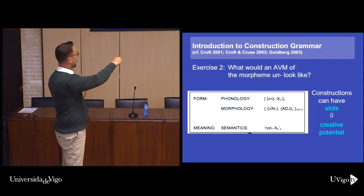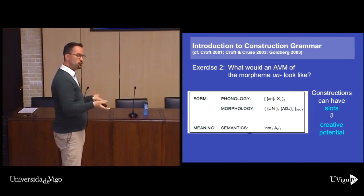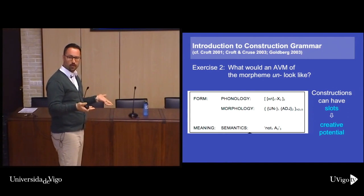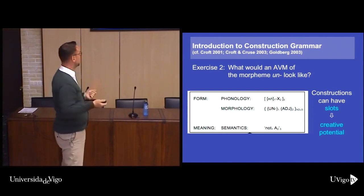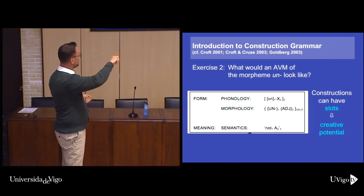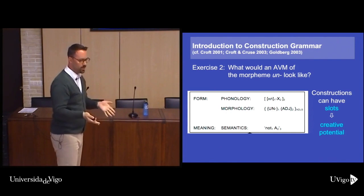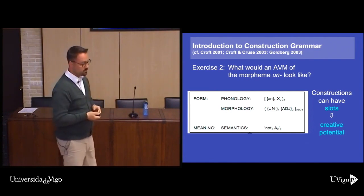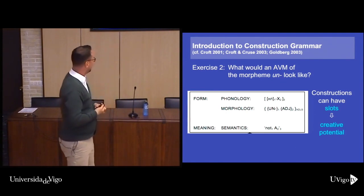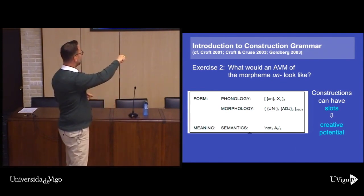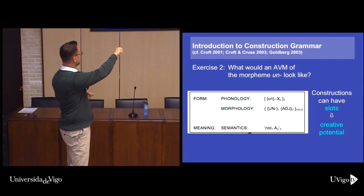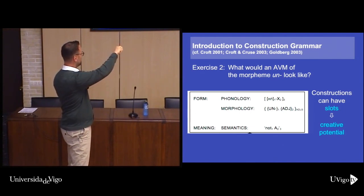The slot mechanism works as follows: if you stick in 'happy' — it is an adjective, that checks out — then the meaning is 'happy', and the meaning of the full construction is 'not happy', with the phonological realisation 'unhappy'. So the form-meaning association is: UN- prefix means 'not', and the adjective slot provides the property being negated.